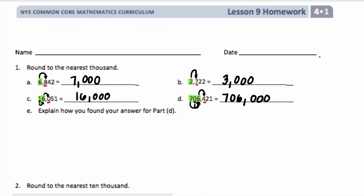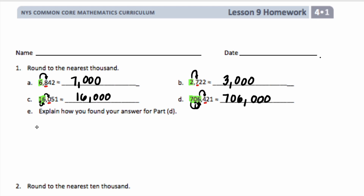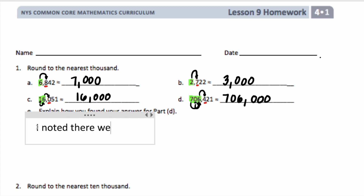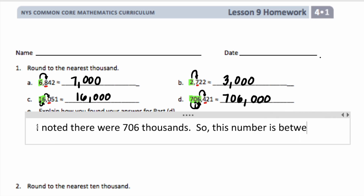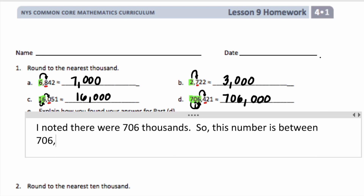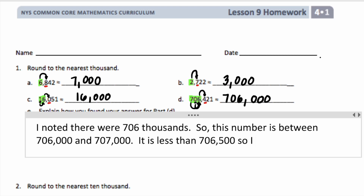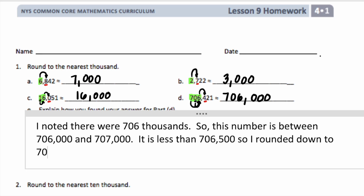It says, explain how you got your answer for part D. I'm going to say: I noted there were 706 thousands, so this number is between 706,000 and 707,000. It is less than 706,500, so I rounded down to 706,000.